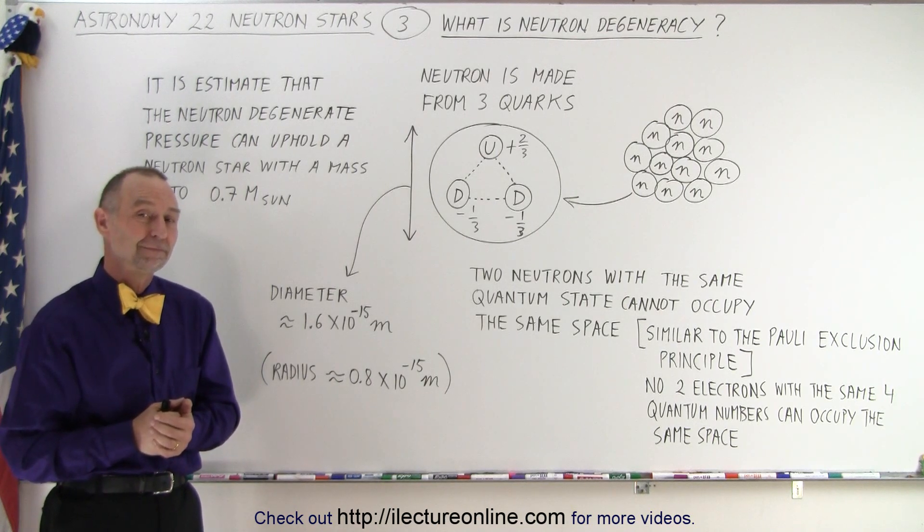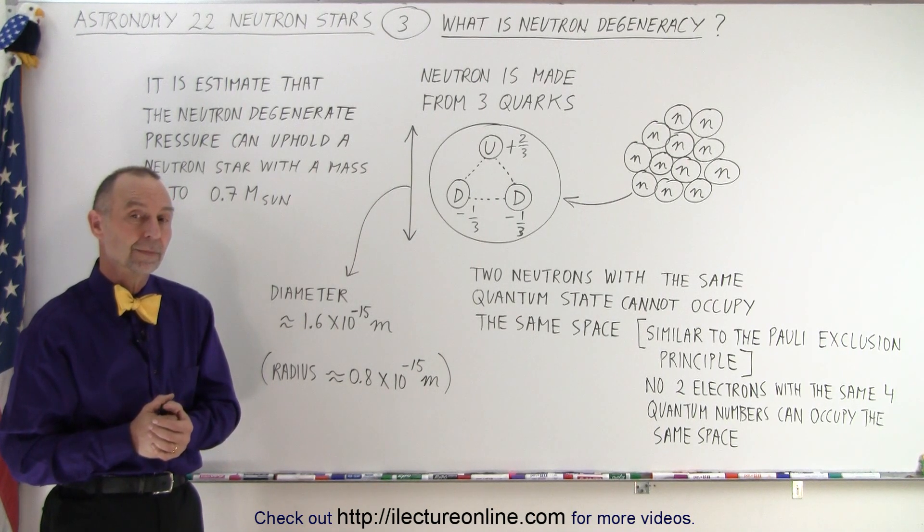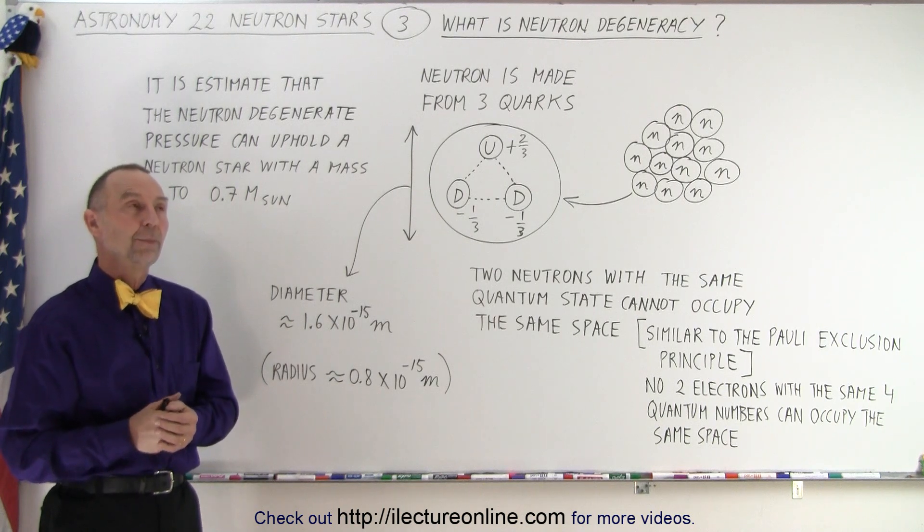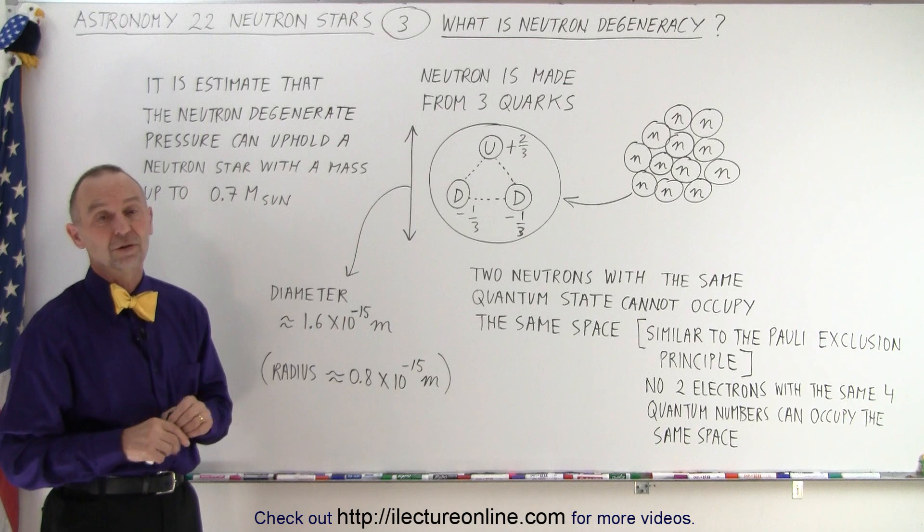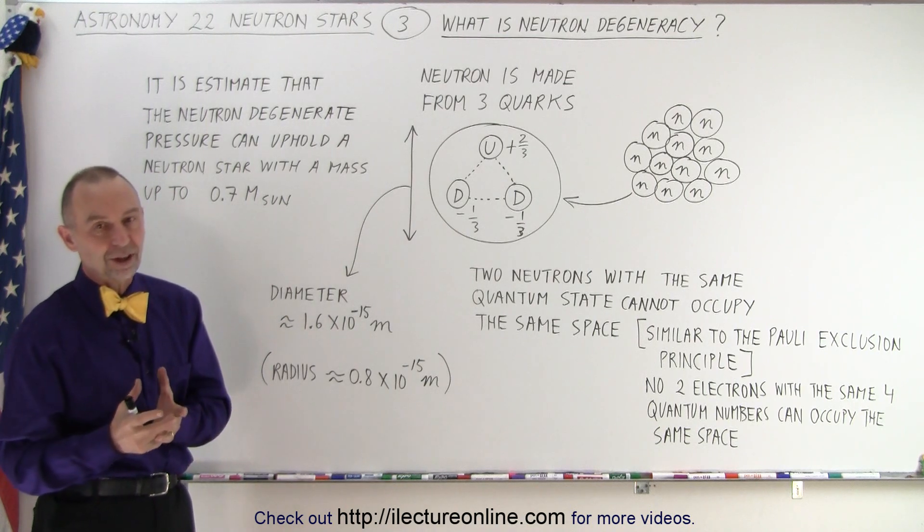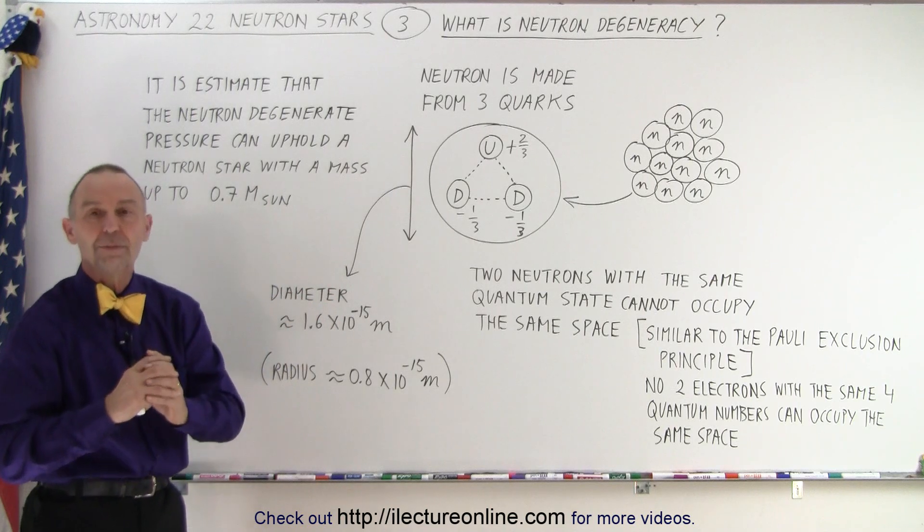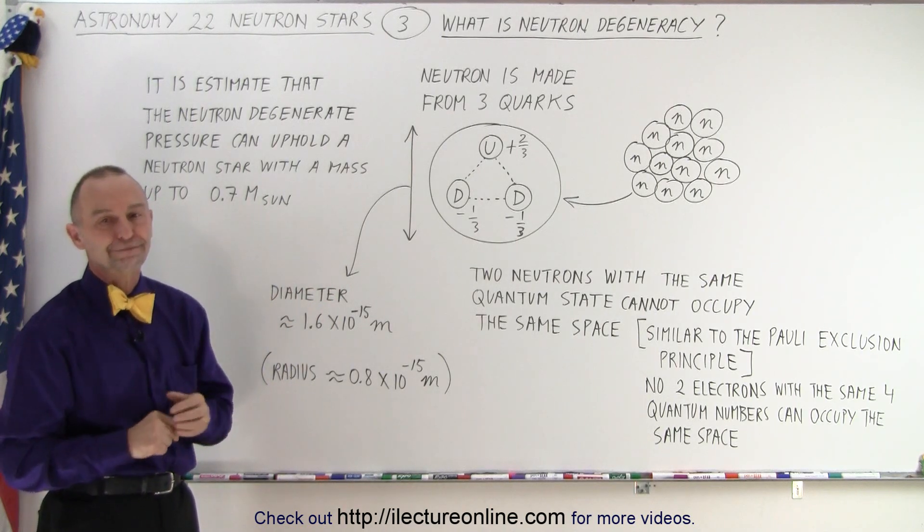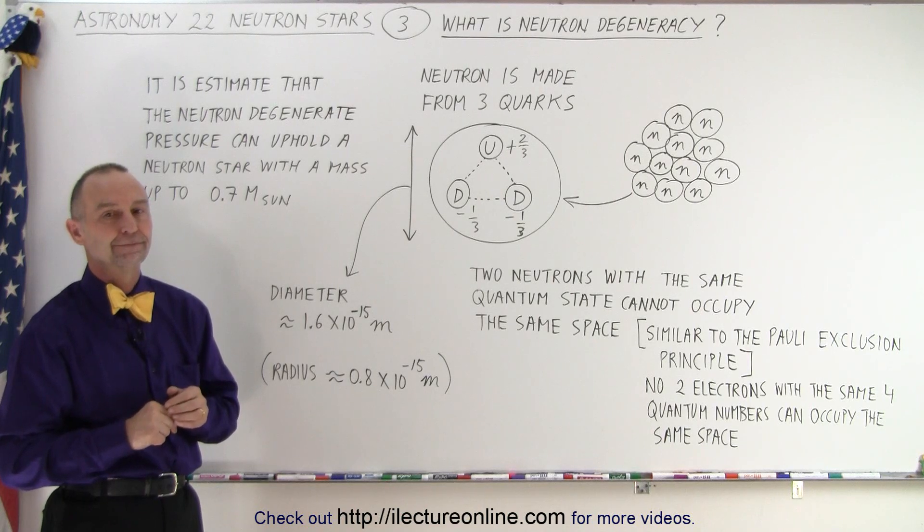You said in the other videos that a star has to be 8 times the mass of the sun in order to become a neutron star. In order for the core to become a neutron star. Correct. So the core isn't 8 times the mass of the sun. The whole star is. If the star isn't big enough, then the core isn't big enough to make a neutron star. So when it becomes a neutron star, then it's only 0.7, is that the mass of the sun?